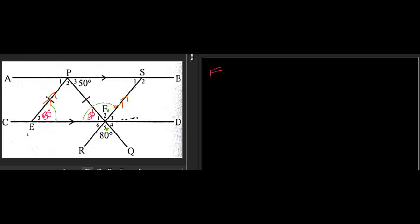The next question asks: can you prove that EP is parallel to RS? We know from parallel line rules we can use F corresponding, U co-interior, or N alternate angles. I notice that F2 is vertically opposite F5, so F2 equals F5 equals 80 degrees — vertically opposite angles.